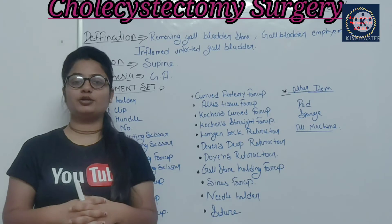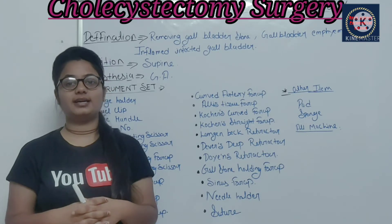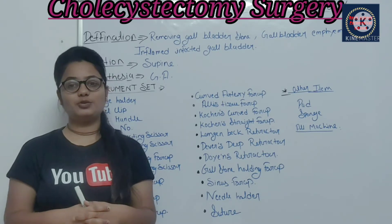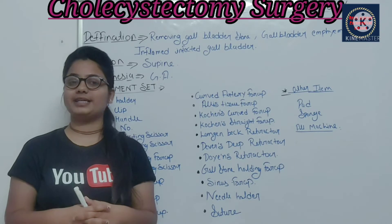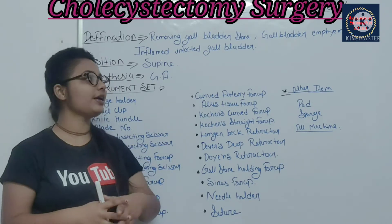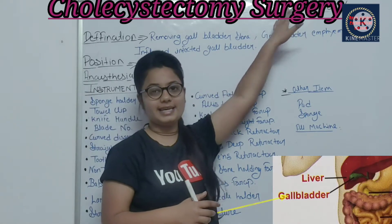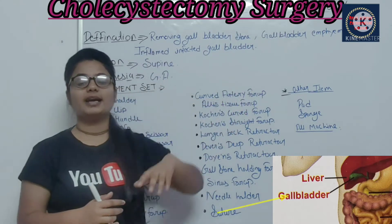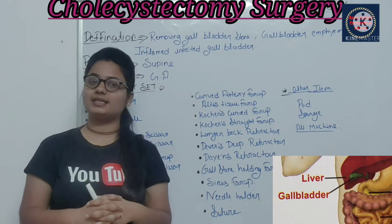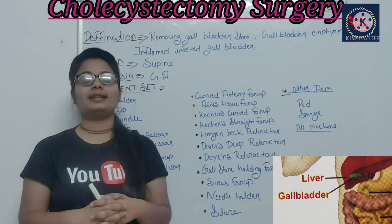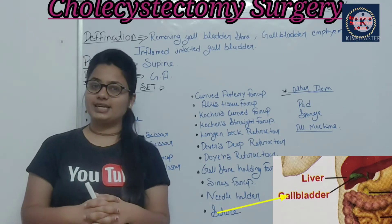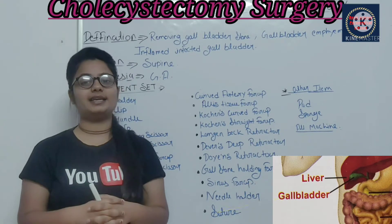I am going to tell you which anesthesia is used in surgery, which position is given, and how instrumental preparation is done. Today I am going to tell you about cholecystectomy surgery — what it is and how the preparation is done, which anesthesia may be given, and which part and organ is involved.